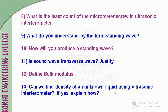We can find the density of an unknown liquid using the ultrasonic interferometer. If we know the compressibility of that liquid, we rearrange K = 1/(V²ρ) to get ρ = 1/(V²K). Since we can calculate V (velocity of ultrasonic waves) from the experiment and K is known, we can determine the density of the unknown liquid in the measuring cell.